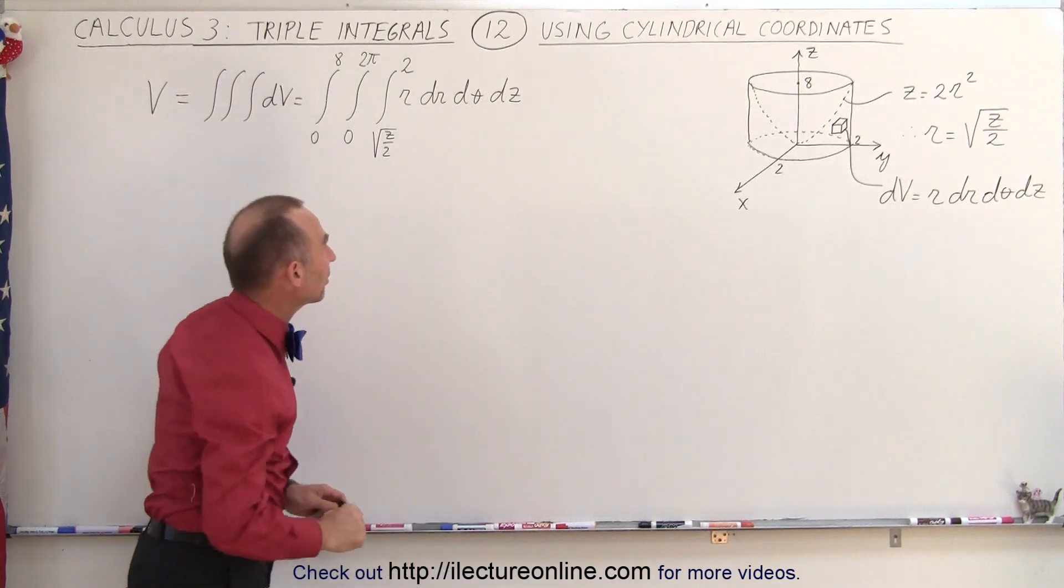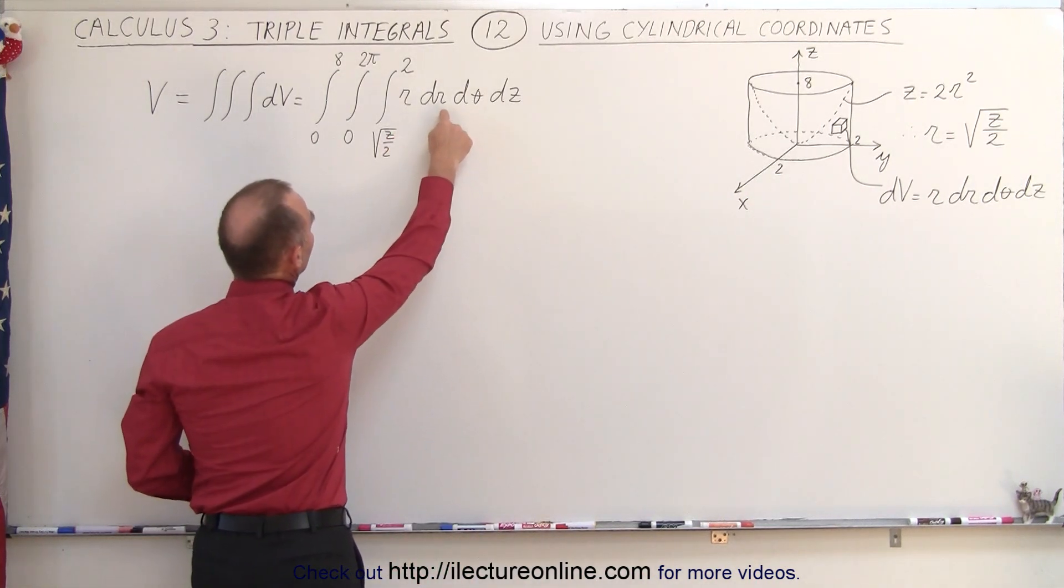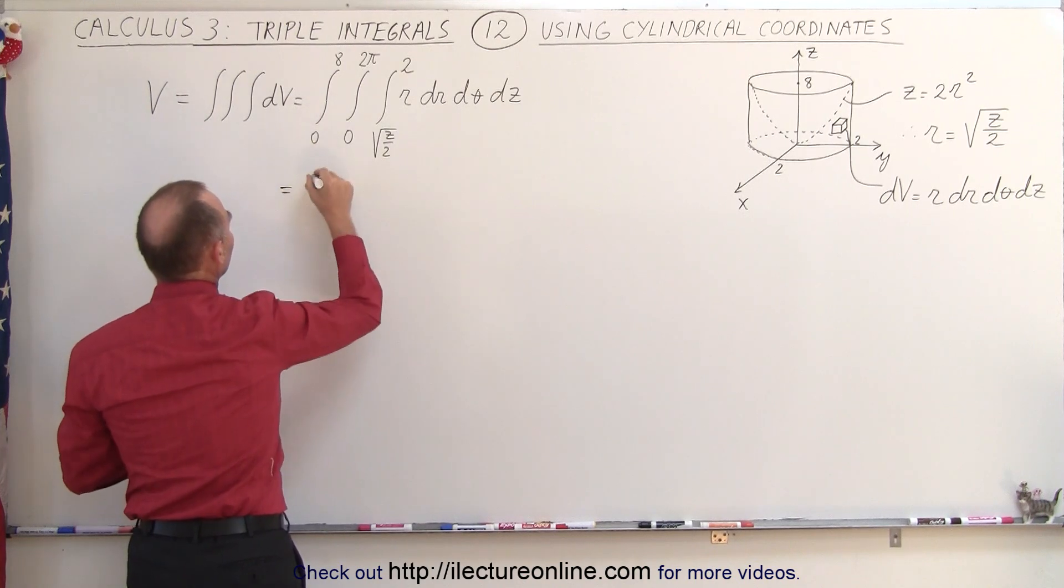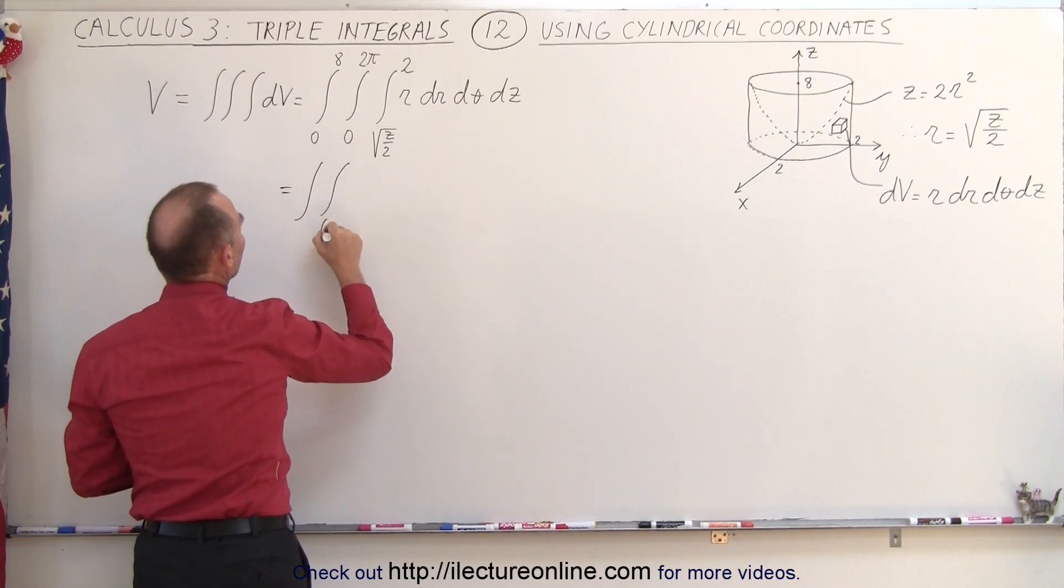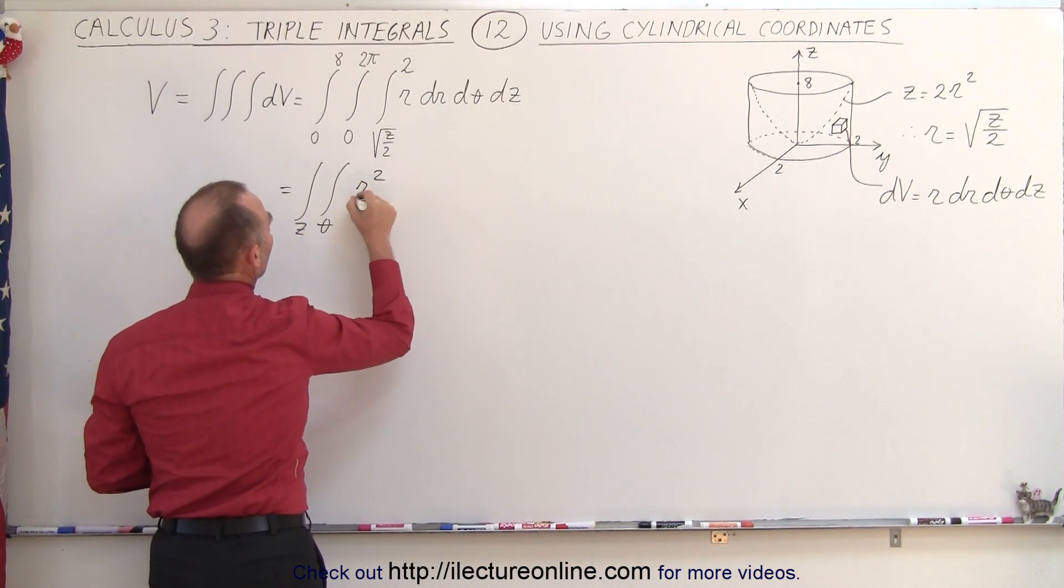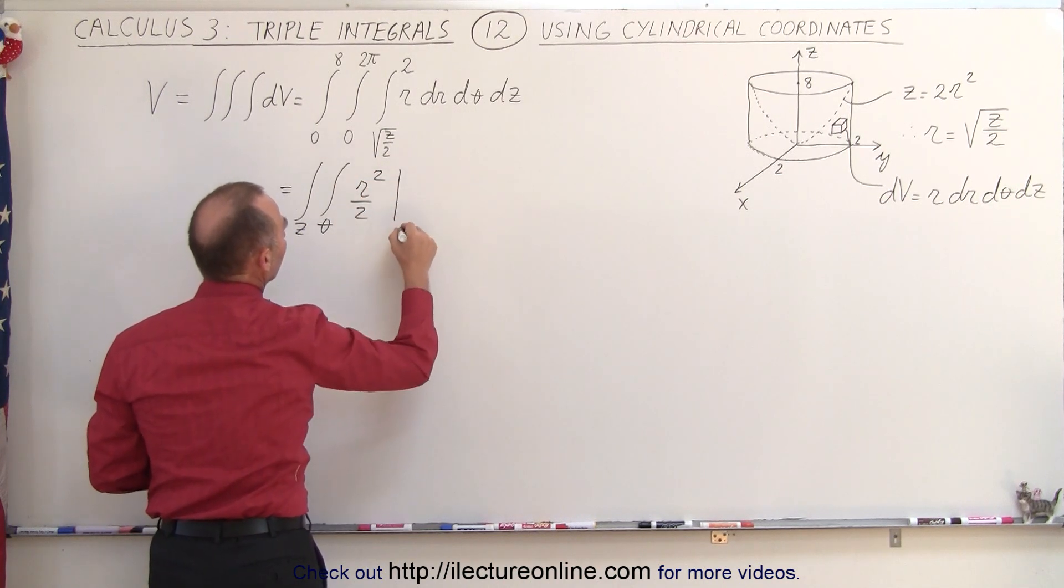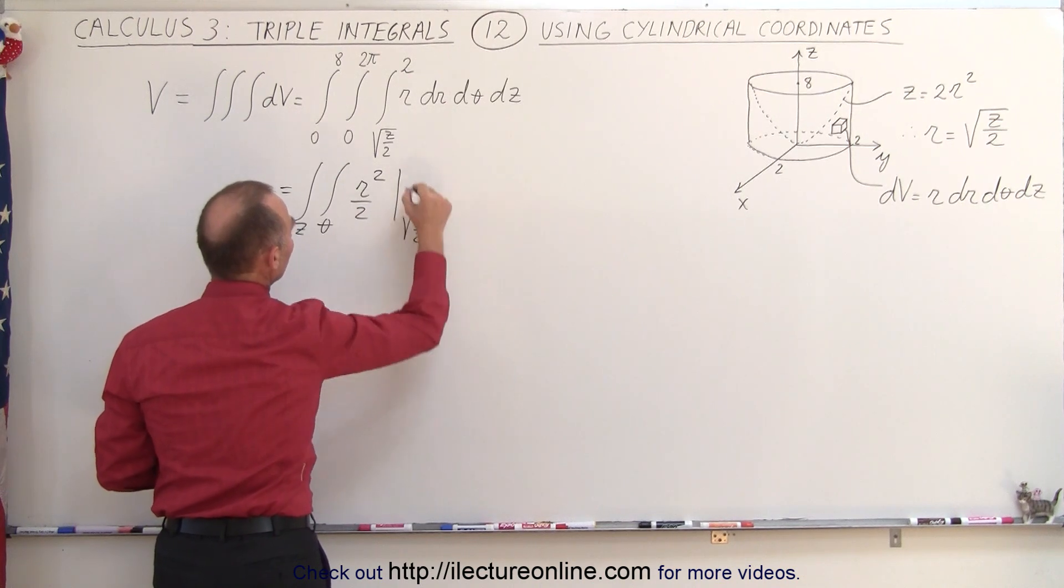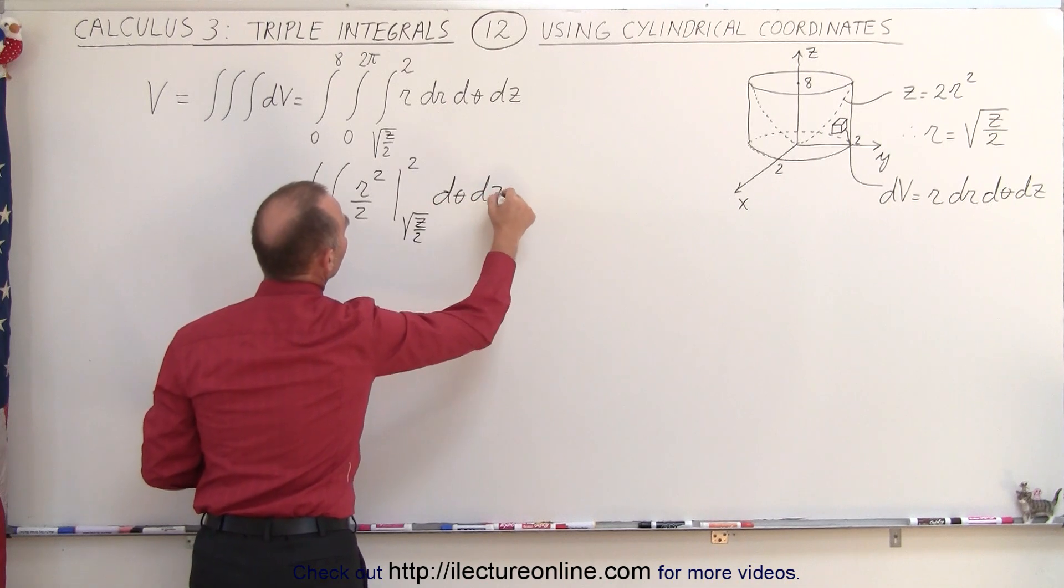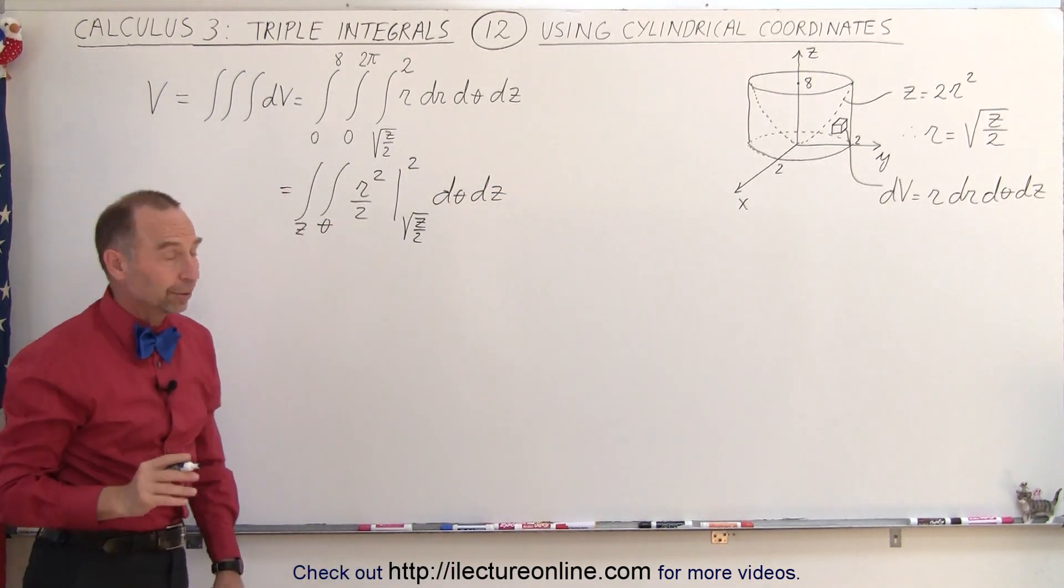So now this is how that goes. We're first going to integrate over r, dr, and so this becomes equal to, we still have the double integral over theta and over z. But this becomes r squared over 2, evaluated from the lower limit to the upper limit, and we still have dθ and dz, the other two that we have to integrate over.